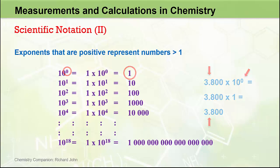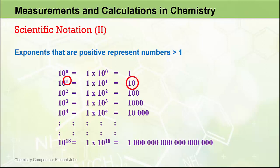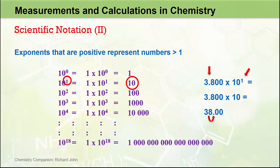If we look at an exponent of 1, i.e. 10 to the power of 1, this represents the value of 10. So 3.800 times 10 to the 1 actually represents 3.800 times 10, which equals 38. The decimal place in the coefficient has moved one place to the right, corresponding to an exponent of plus 1. The positive value of the exponent tells us to shift the decimal place to the right, and the magnitude of 1 tells us how many places to move it.